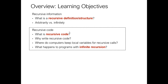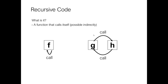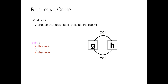What is recursive code? It's very straightforward — just a function that calls itself, and potentially indirectly. Here I have function F calling function F. Indirectly, function G calls function H and H calls function G. So inside the function definition for F, there's a function call that calls F — it's going to go back up F and round in a circle. We'll need a way to get out of that loop for this to be meaningful.